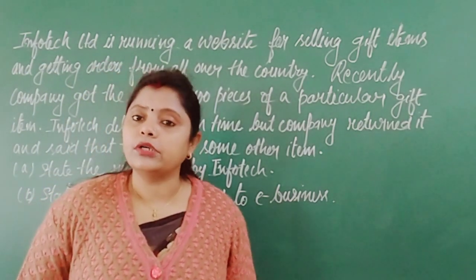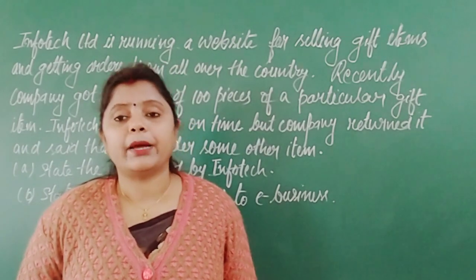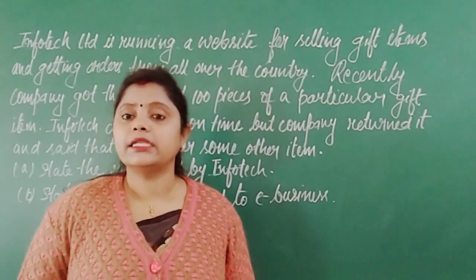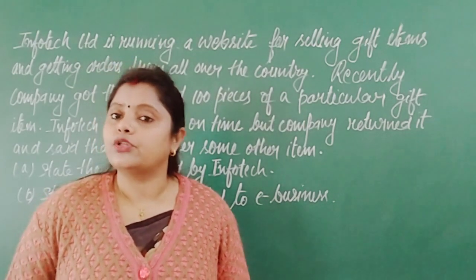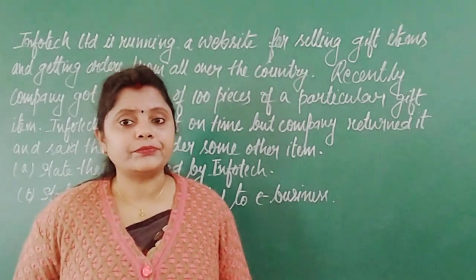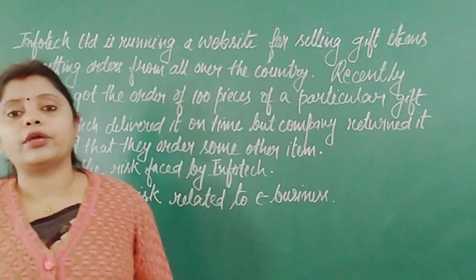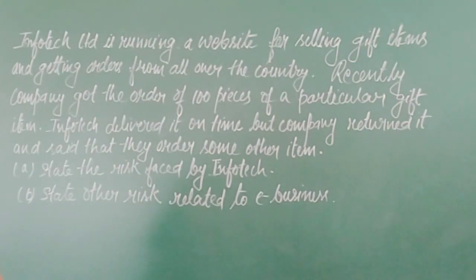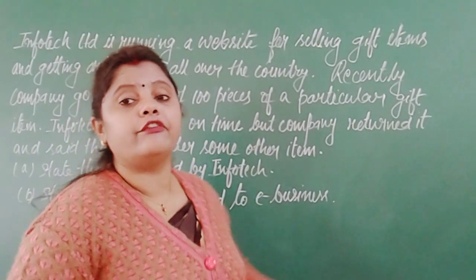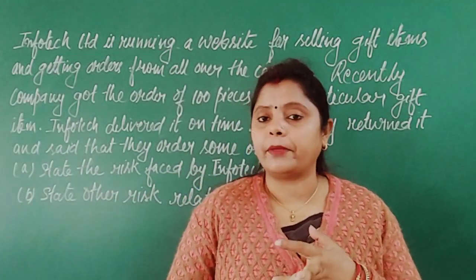We are talking about the first risk because the goods which were delivered are being claimed by the other company to be something else — the name was not the same as what was ordered. So this is about transaction risk. Now, transaction risk is categorized into three parts: default on order, default on delivery, and default on payment.